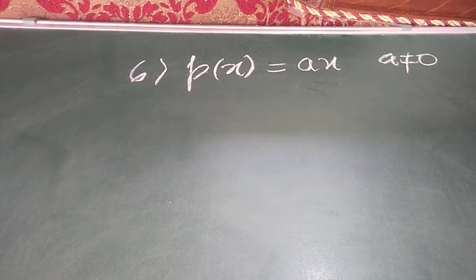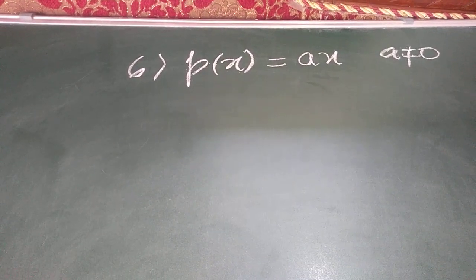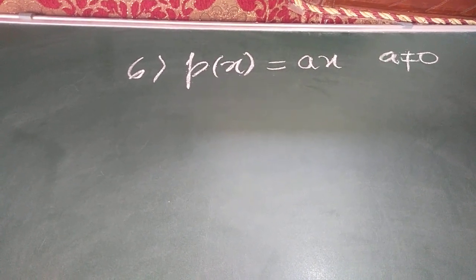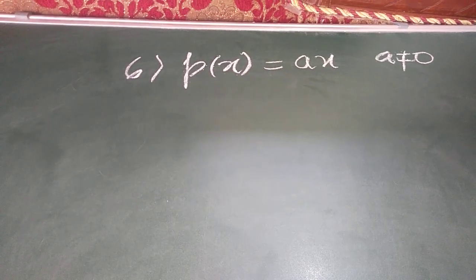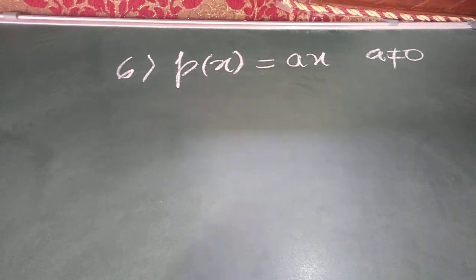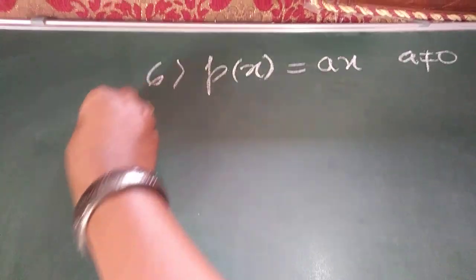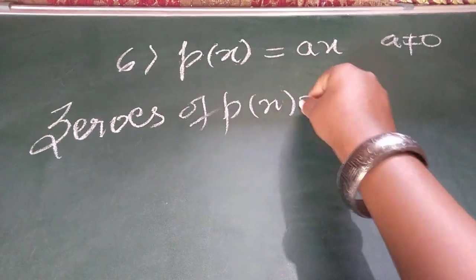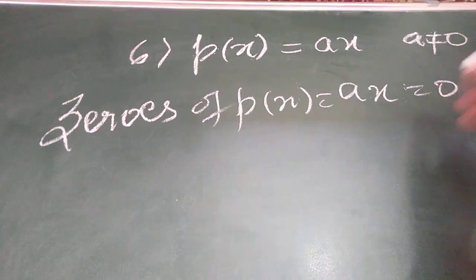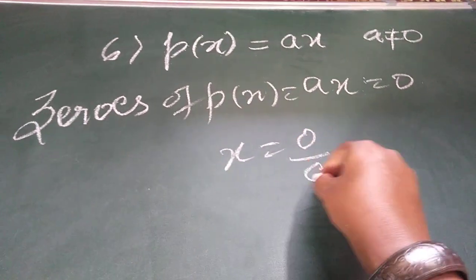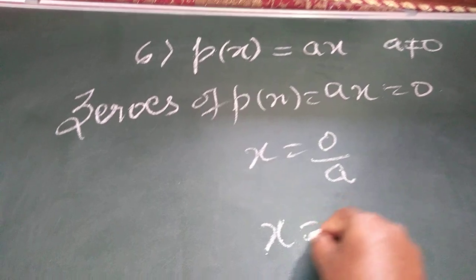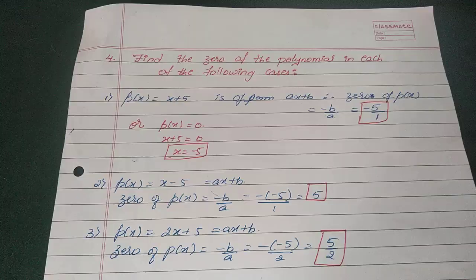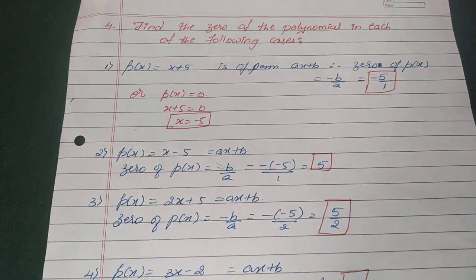So your sixth question is P(x) is equal to Ax, A not equal to 0. Don't get confused with the question, children. It is a question of only one variable where A is the coefficient of x and it is the constant which is not equal to 0. Now, let me equate zeros of P(x) is equal to Ax which equals 0. X equal to 0 by A. It is nothing but x equal to 0. Here, 0 became the zero of polynomial.